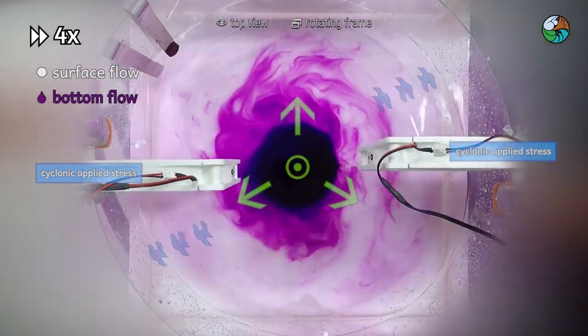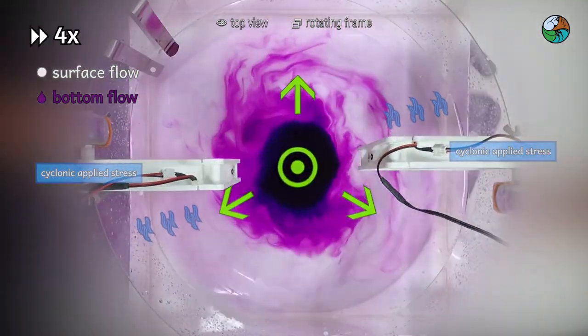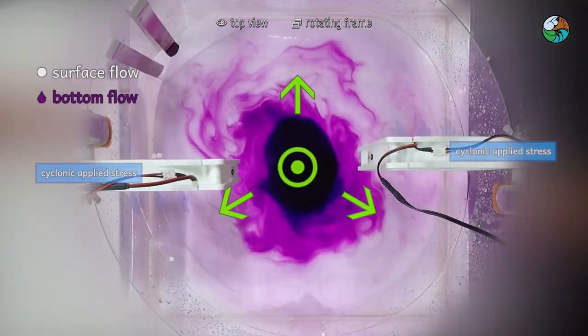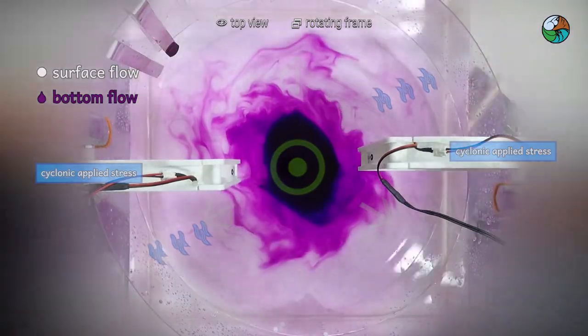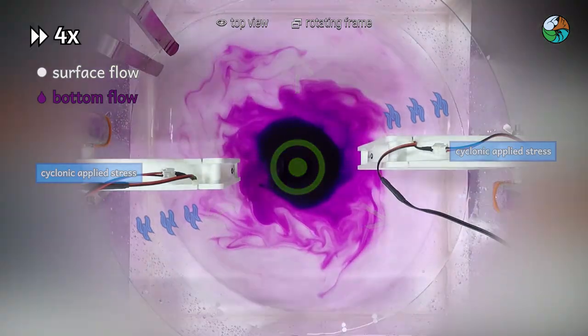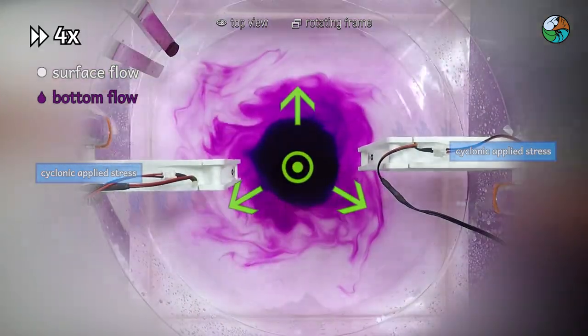Under cyclonic wind, paper dots move away from the center. The surface flow diverges from the center. Potassium permanganate crystals did not spread out. The bottom flow converges to the center.